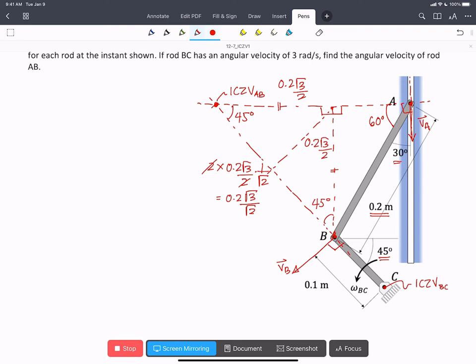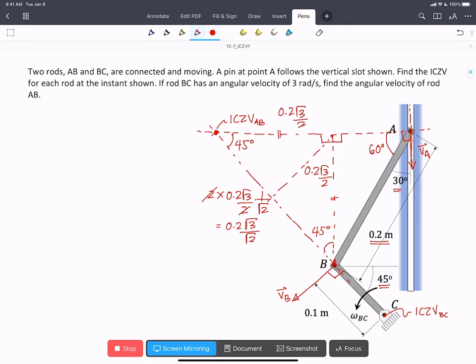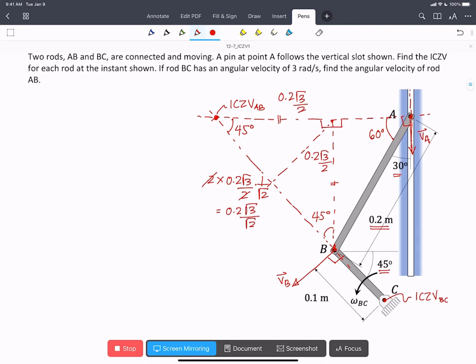Okay. We've got almost everything we need to do the second part of the problem, which is to find the angular velocity of rod AB. So we'll start with assuming a direction for AB, omega AB.